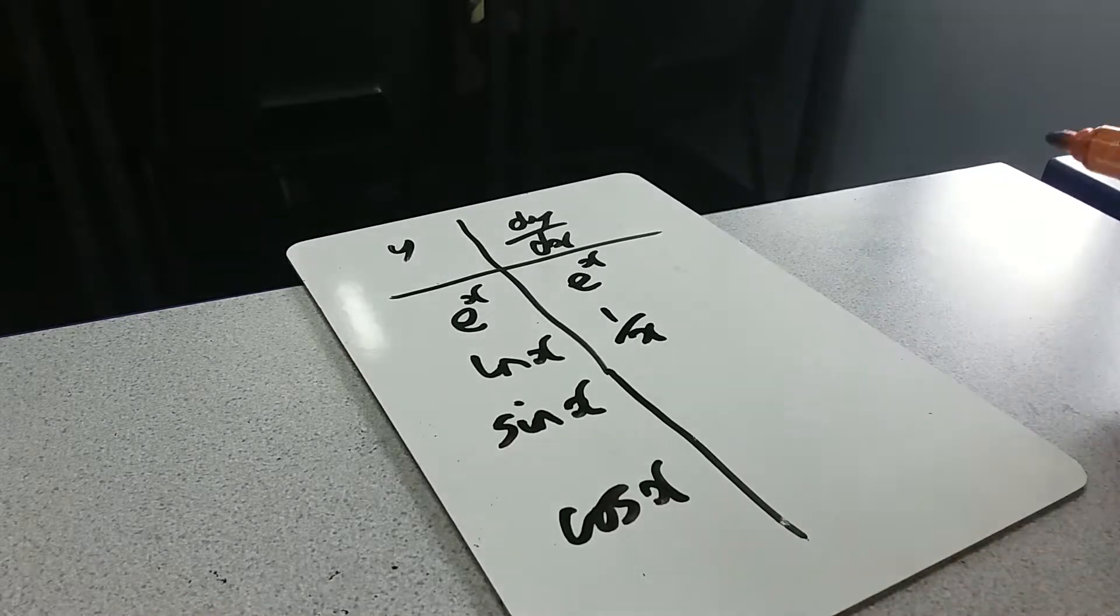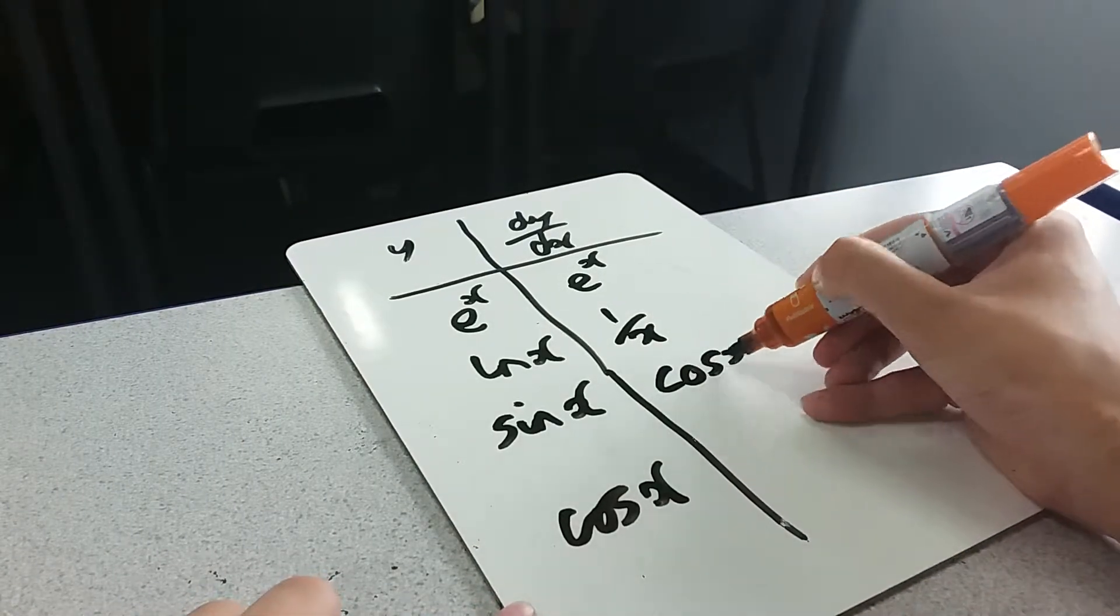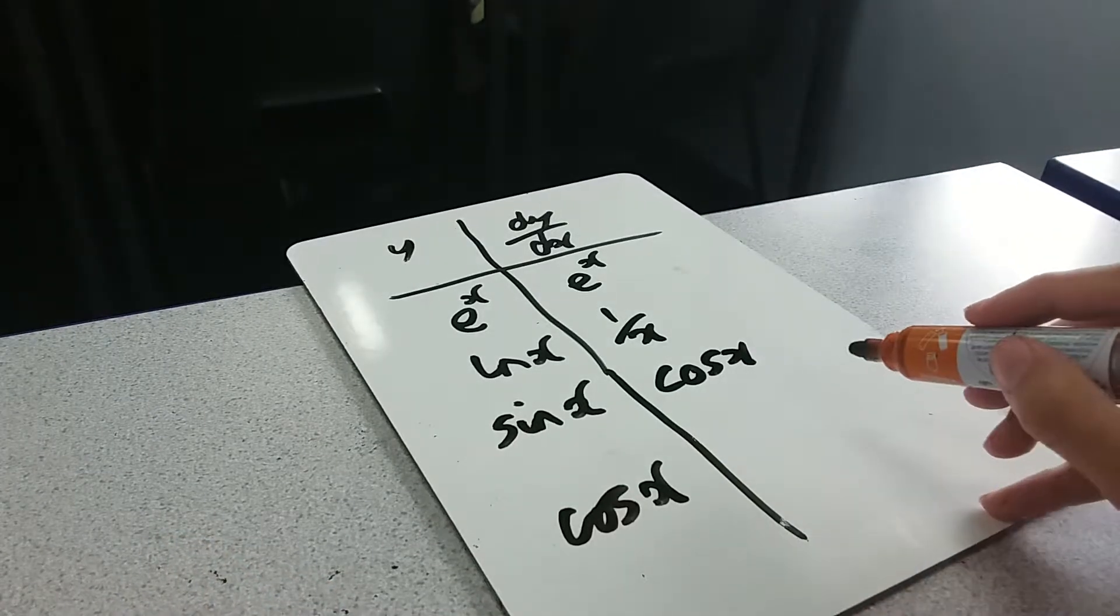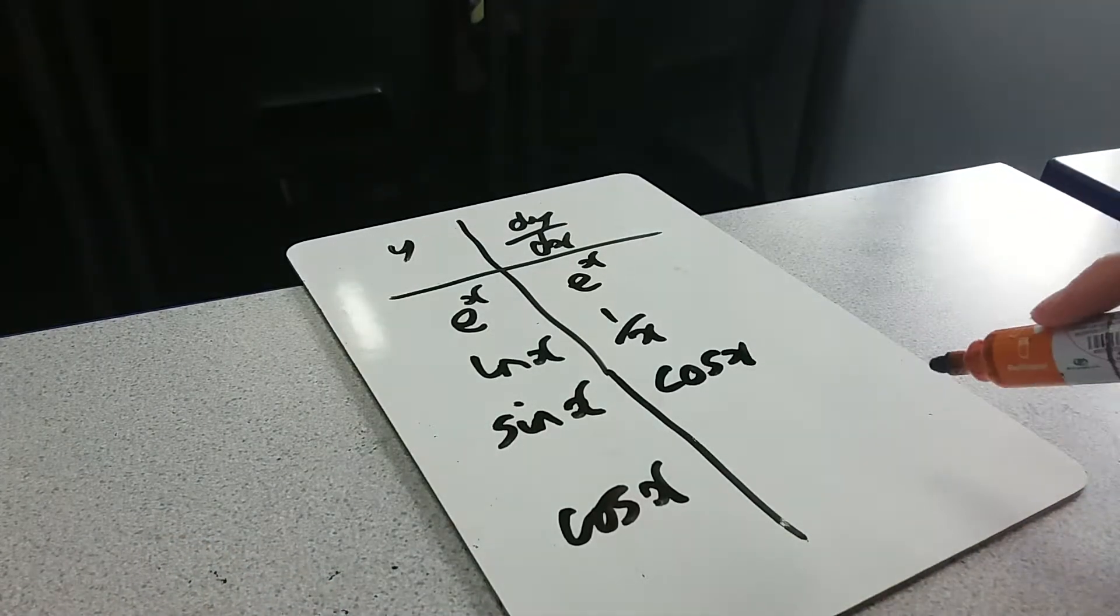Sine x, one of the nice properties about it is that it goes to cos x. Now this is only true when you're in radians. This is almost the whole point of radians.